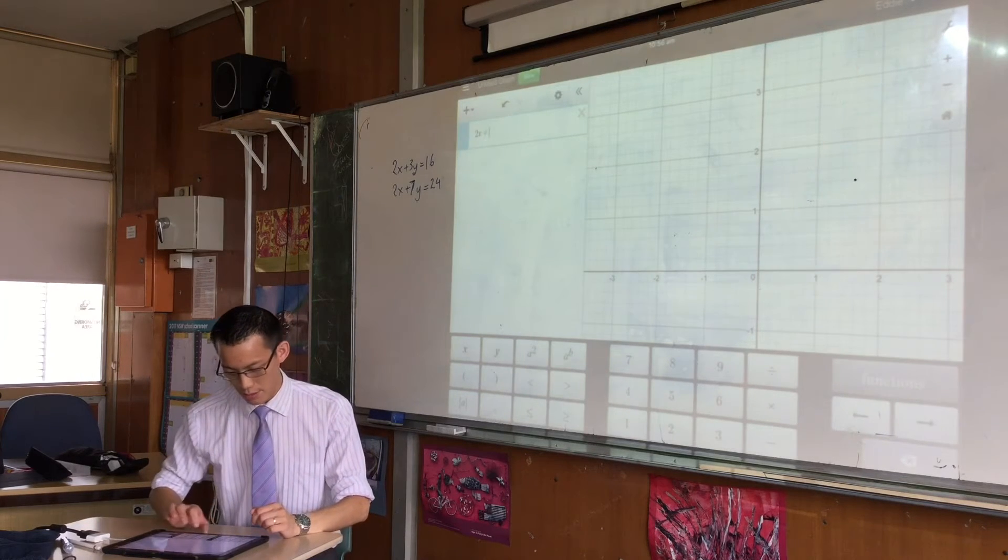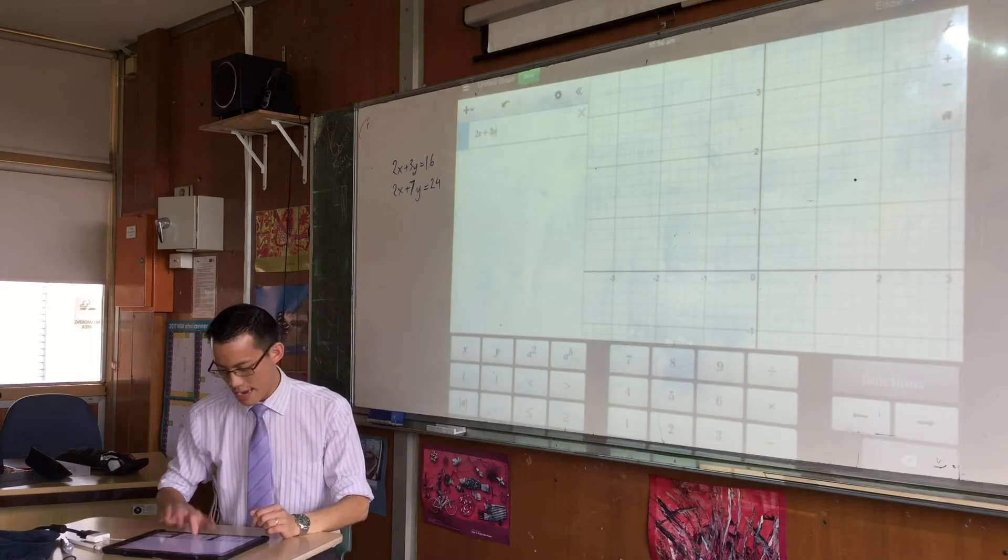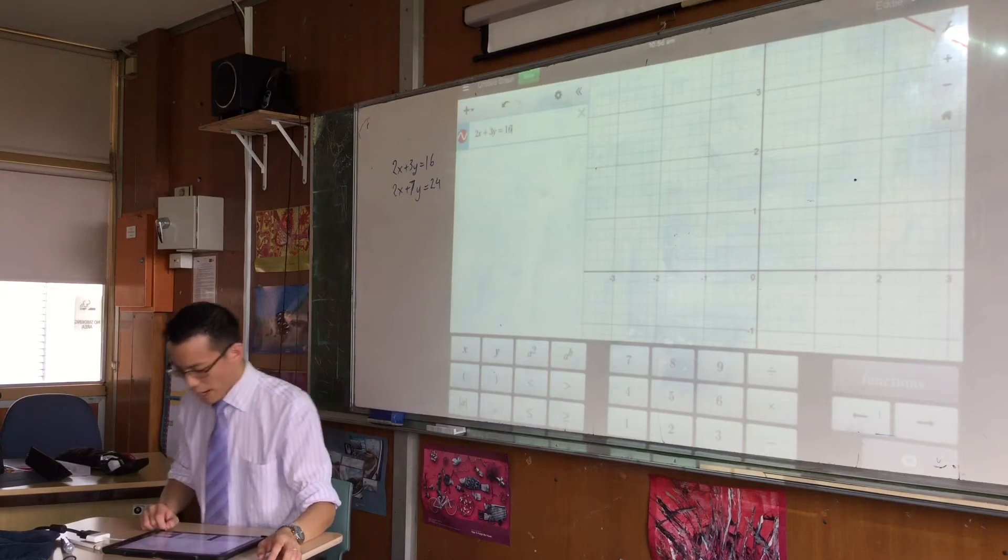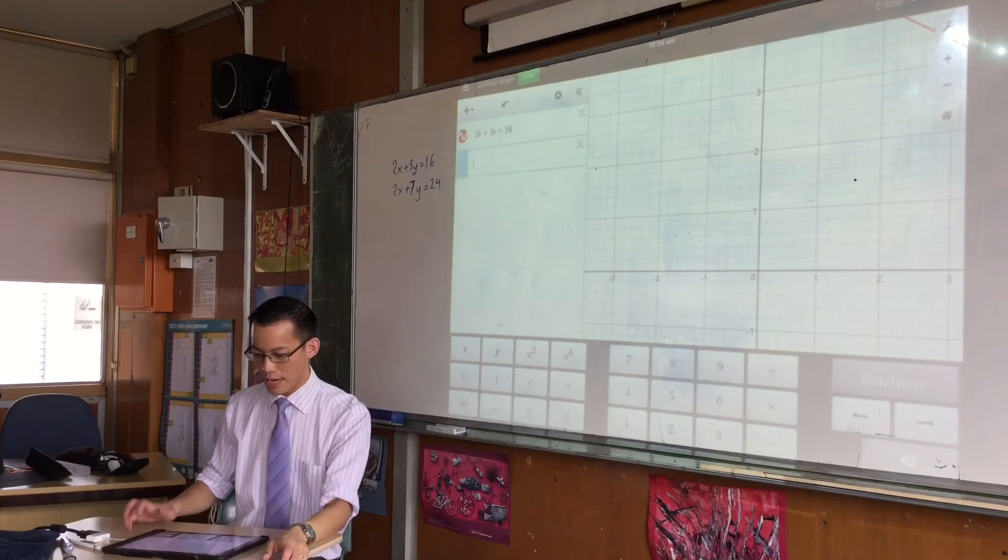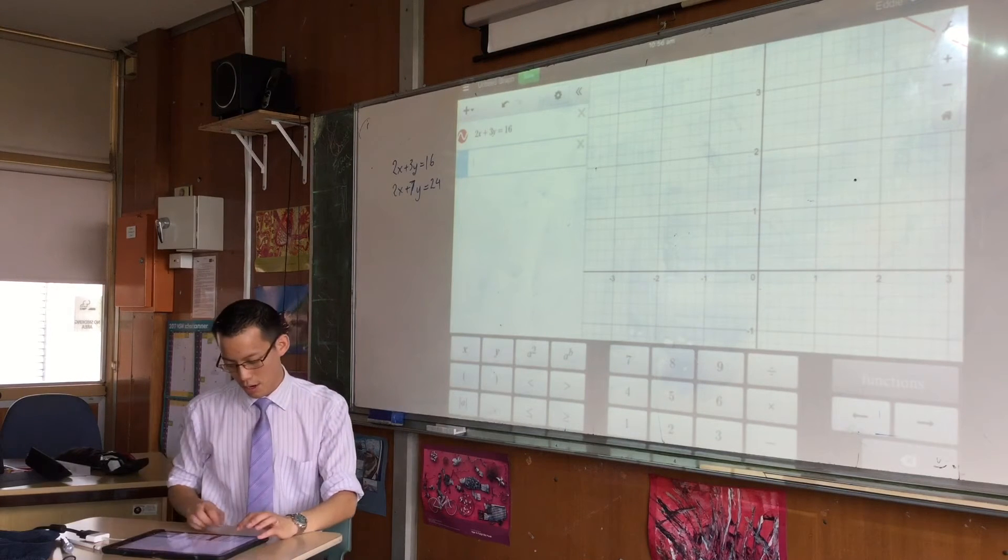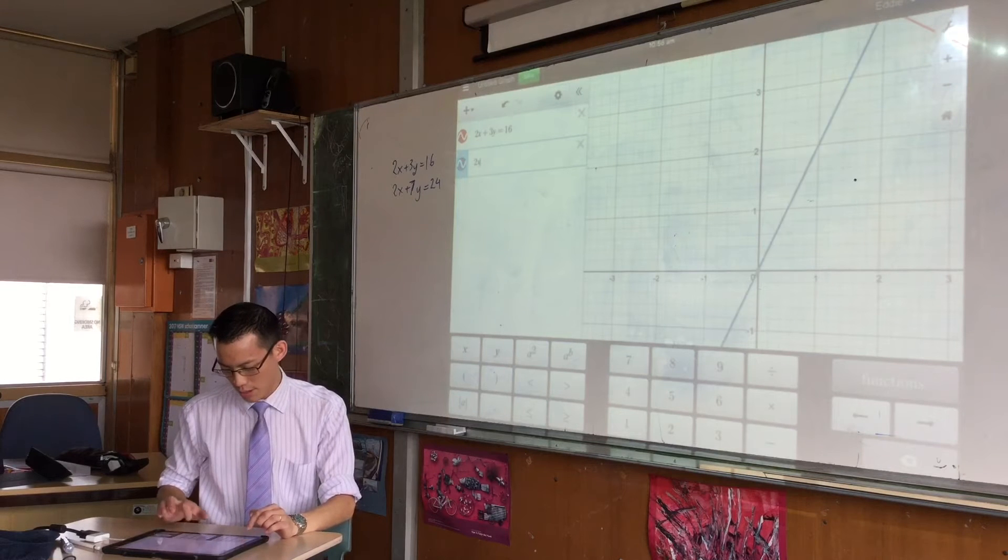So if we delete this, let's go. 2x plus 3y equals what's it equal to? 16. All you have to do is press enter on your keyboard, and then you can write in as many functions or things that you like.